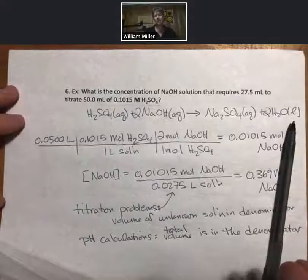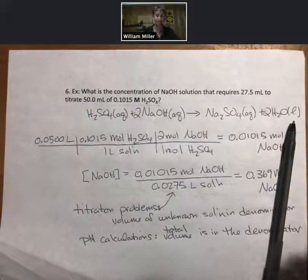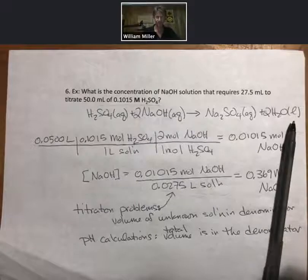We're trying to determine the concentration of the sodium hydroxide before it's added to this sulfuric acid. We want to know what was the concentration of the sodium hydroxide before adding. For the pH calculations, we're asking the question, what is the pH after the two are mixed together?